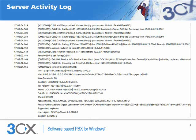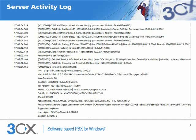The server activity log will show messages about the call request it has received, the routing options it has available, the destination chosen to deliver a call, and the status of certain elements of the PBX. These details can be increased by setting the logging mode to verbose, with the additional by-product of even more detailed information being generated in additional log files that are not immediately viewable in the server activity log but are saved for possible analysis by support staff.